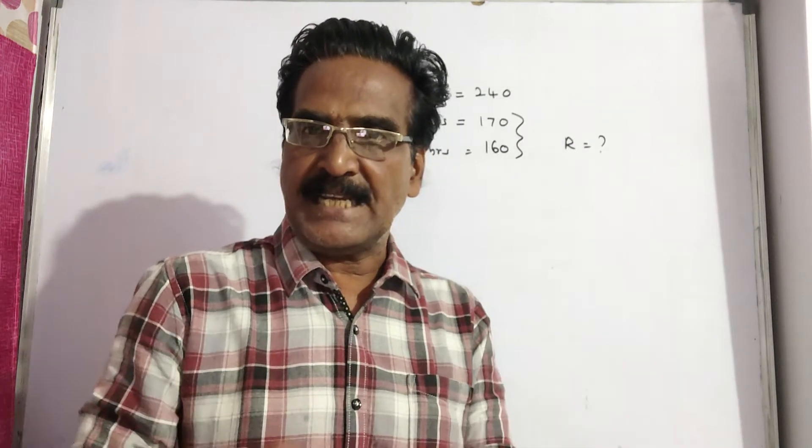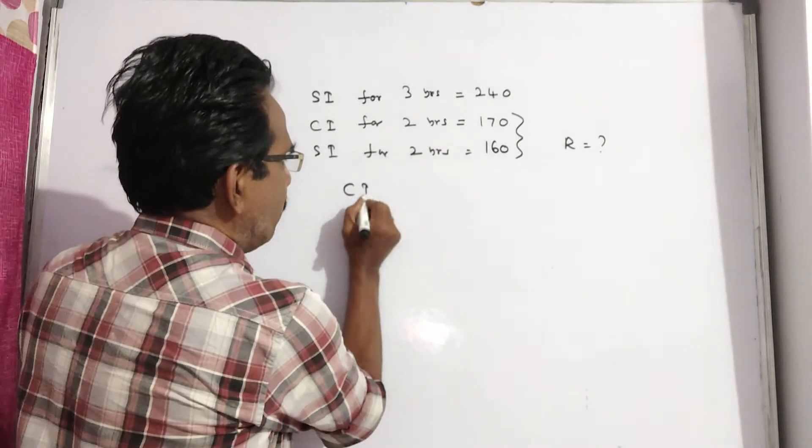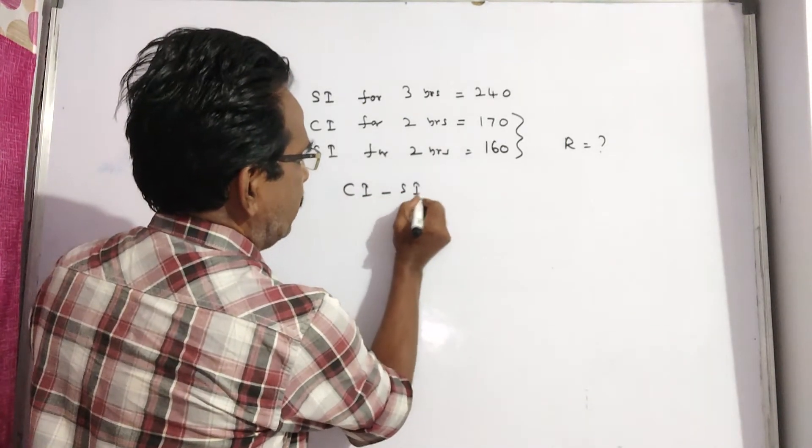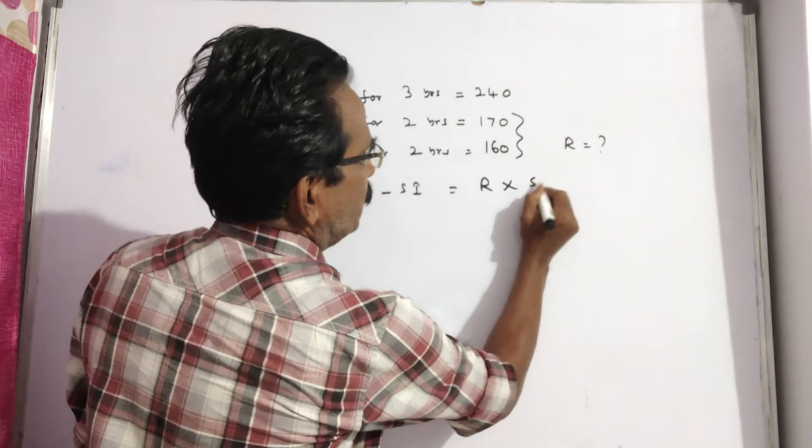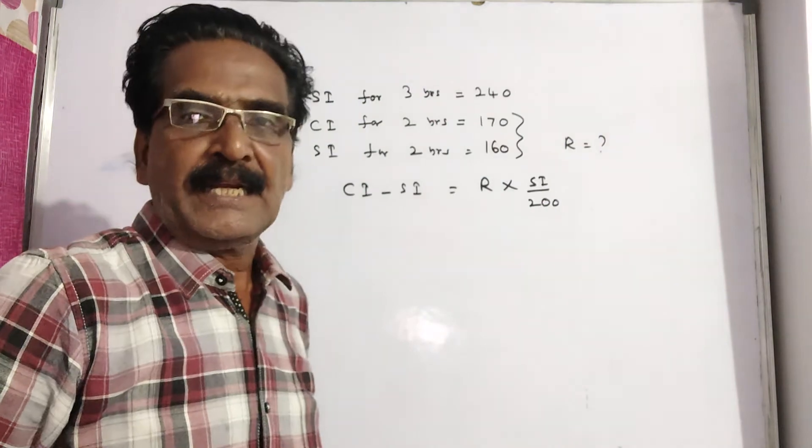the difference between CI and SI is given by this formula. CI minus SI is equal to R into SI by 200. To find R, this formula you can apply.